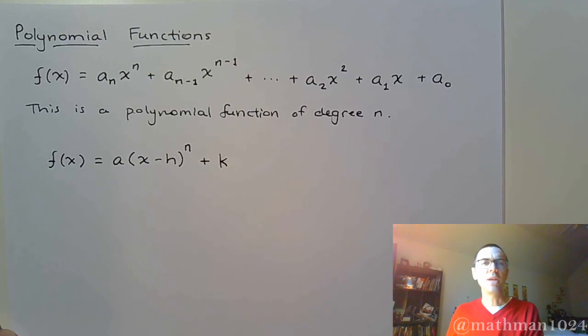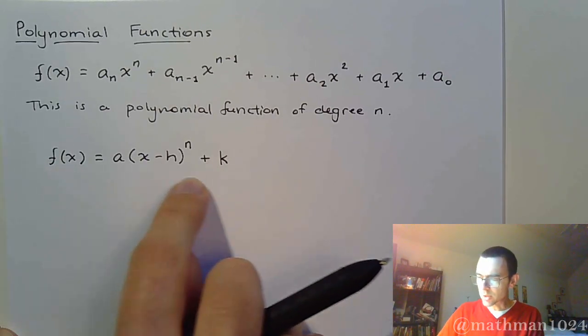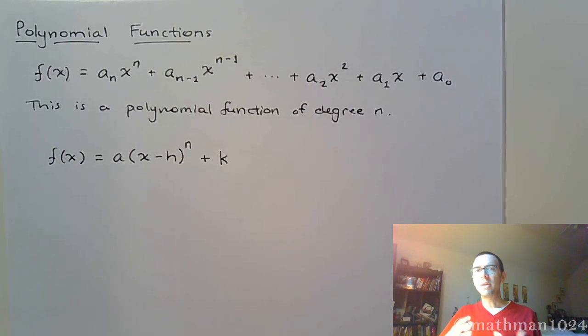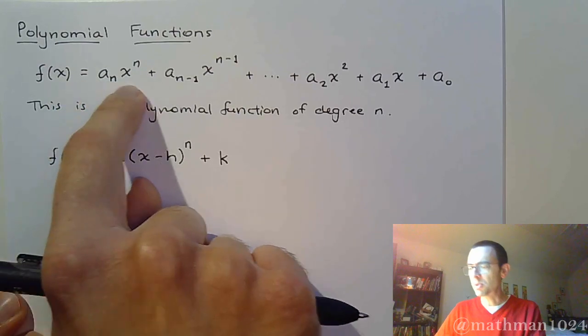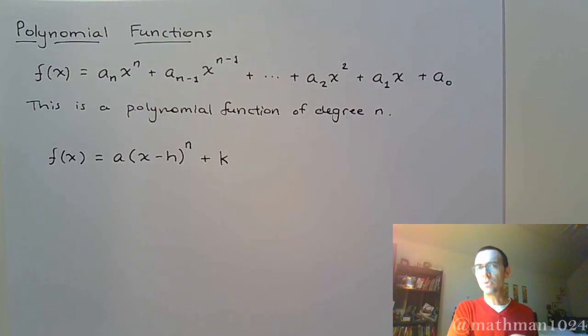Let's talk about the end behavior, because the end behavior coupled with this form will tell us a lot about the basic shape and the location of these polynomial functions. It's not going to be very often that we're going to be seeing it all spread out like this.